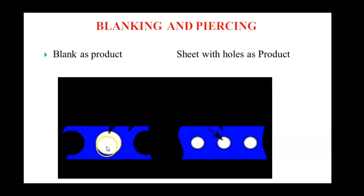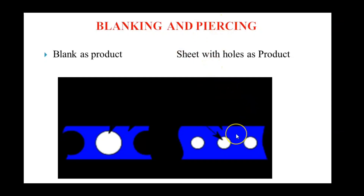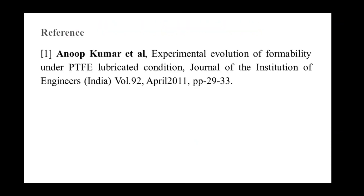You see here — this is the white color blank used as a product, which is called the blanking process. But you see this sheet metal where we performed the piercing operation and made three holes — one, two, three — in the blue color sheet metal. This sheet metal with these three holes is used as a product, so this process is called the piercing or punching process. In the next class, we will discuss the design of the die and the clearance between punch and die, which is important for production purposes. Thank you very much.